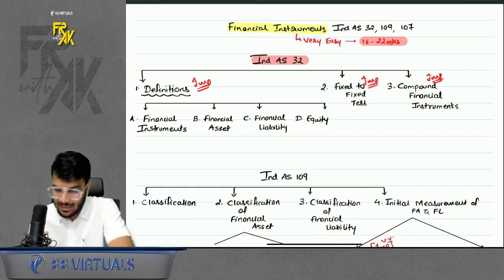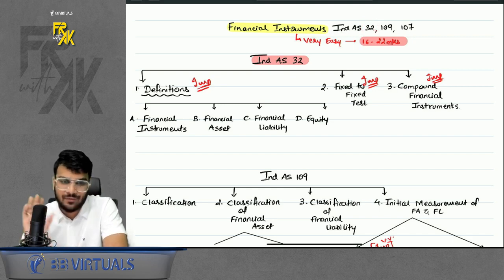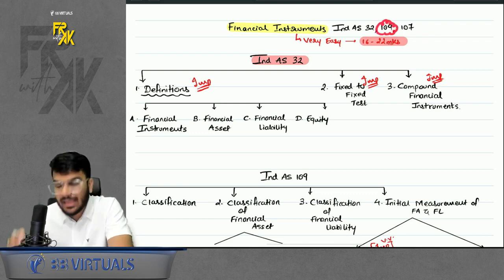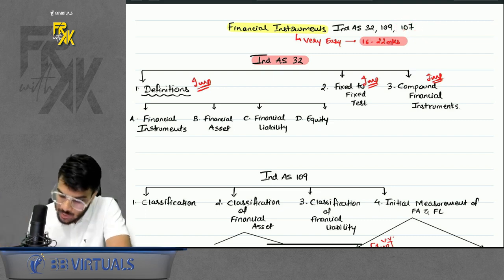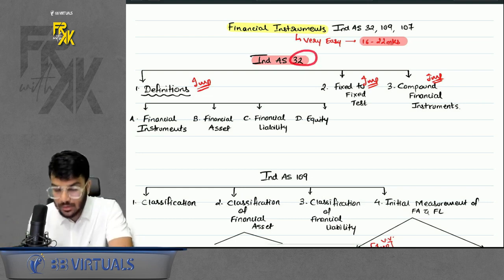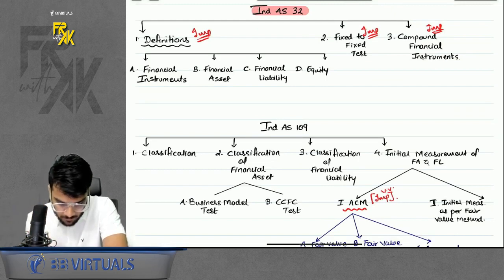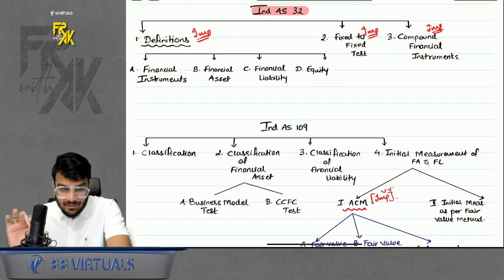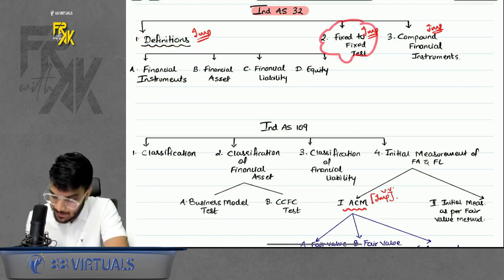In Financial Instruments, there are three indices: IND AS 32, IND AS 109, and IND AS 107. IND AS 32 covers the definition part. IND AS 109 covers the accounting part, and it is the most important. IND AS 107 covers the disclosure part. Under IND AS 32, we focus on three aspects: definitions, the fixed-to-fixed test, and compound financial instruments.